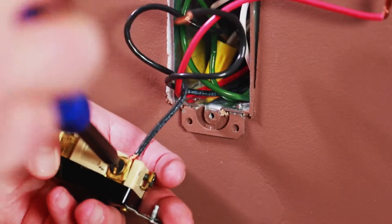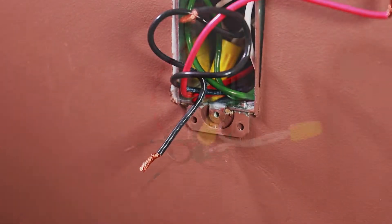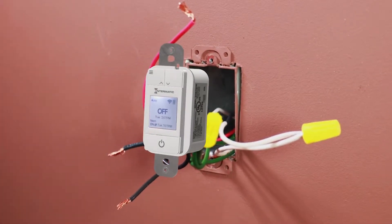The next step is to remove the existing switch from the load side. This is where you will place the timer.